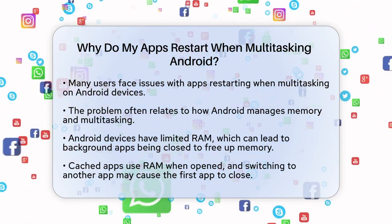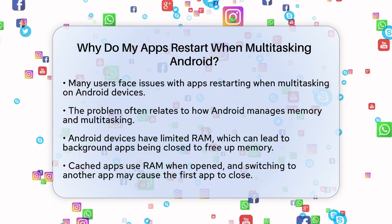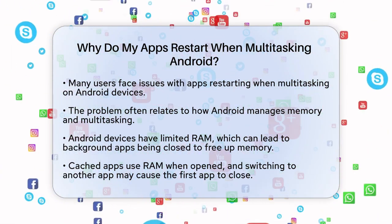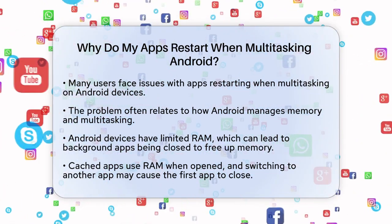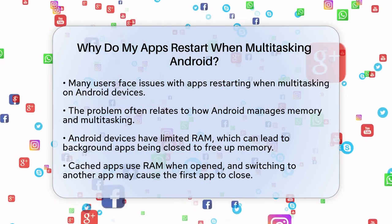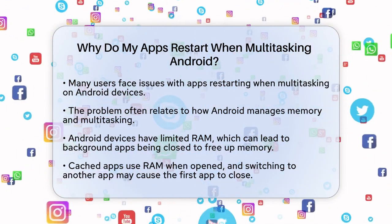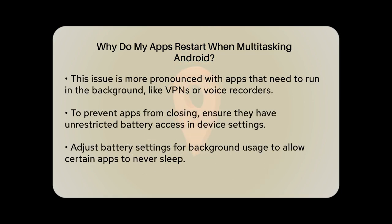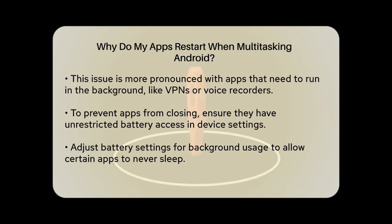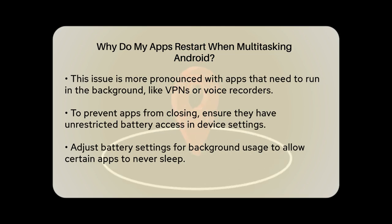Android devices have limited RAM, and when you switch between apps, the system might close some apps in the background to free up memory. When you open an app, it uses some of your device's RAM. If you switch to another app, the first app might get closed to free up RAM, especially if your device is running low on memory. This can be particularly problematic if you're using apps that need to run in the background, like VPNs or voice recording apps.